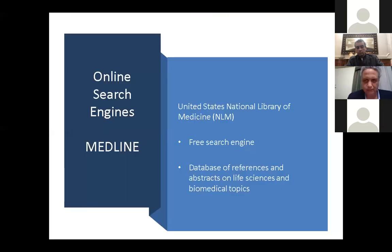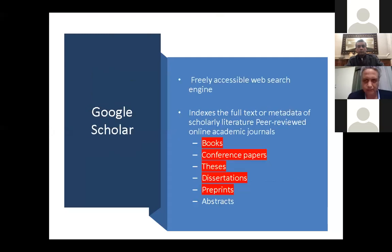One of the most important online search engines — and it's free — is Medline. It searches databases of references and abstracts on life sciences and biomedical topics. Next is Google Scholar, which is also free. On top of that, it includes books, conference papers, theses, dissertations, and preprints — not just abstracts.